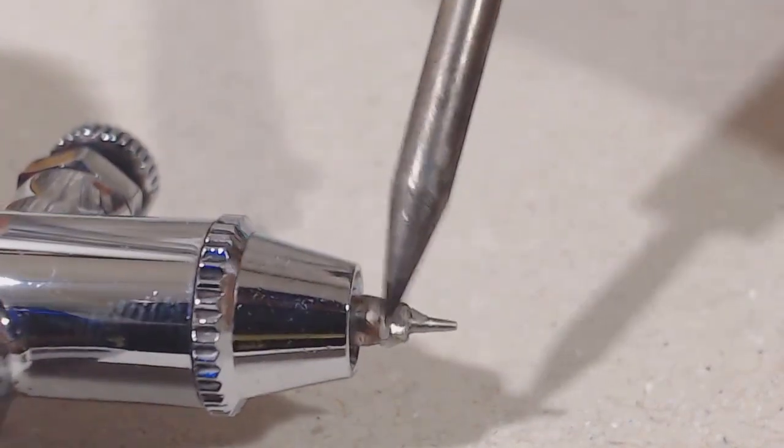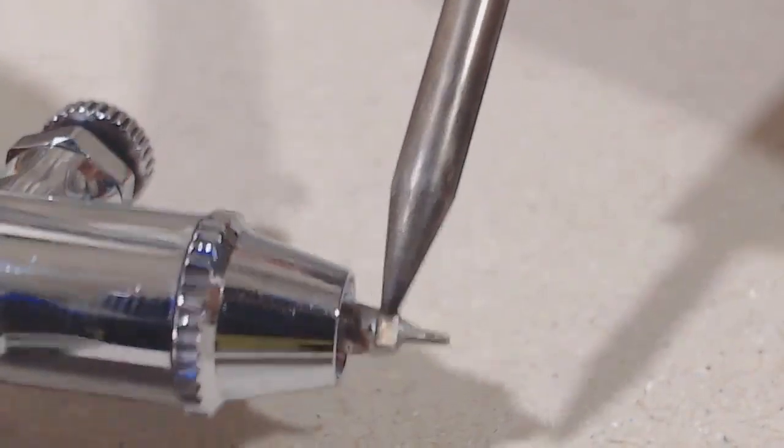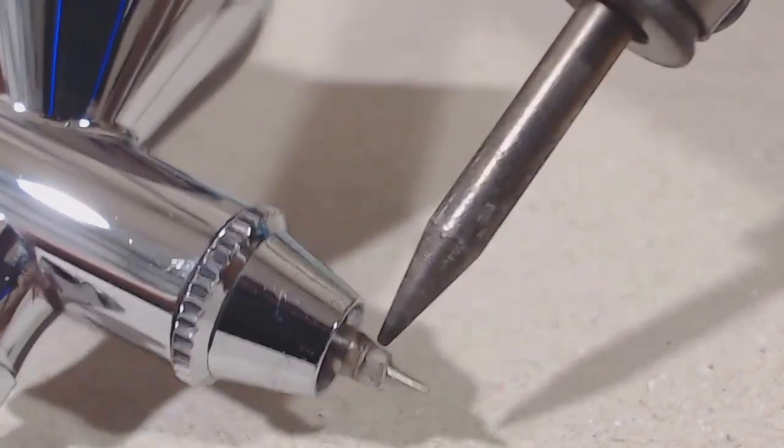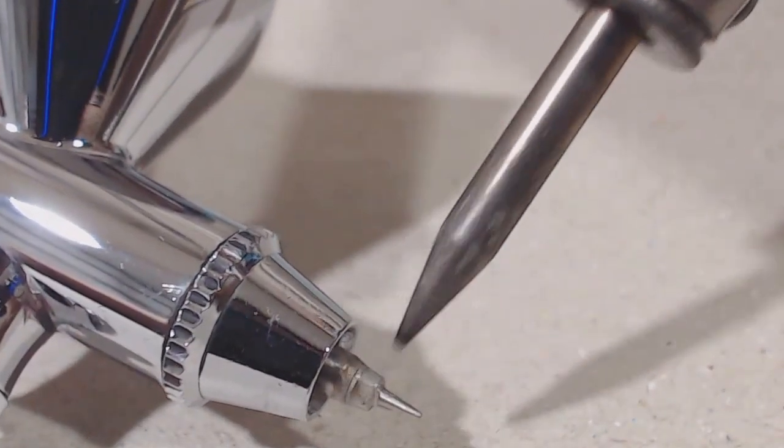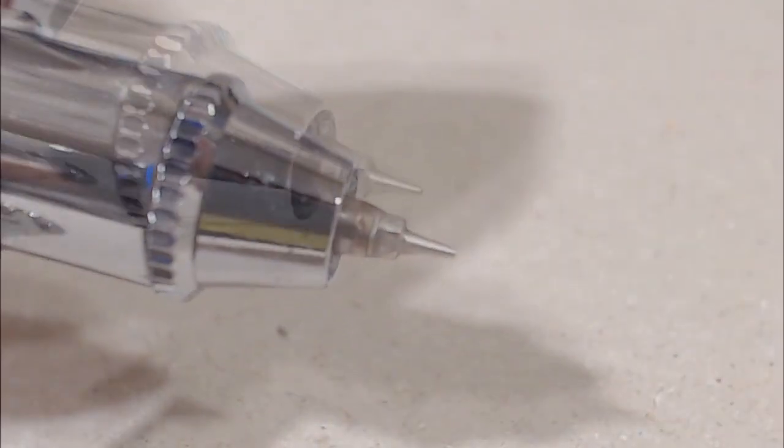After that, just secure the wax by melting it around the nozzle and wipe the remaining. And just like that, it's done.